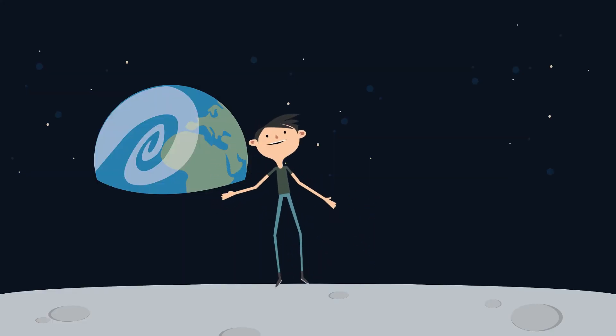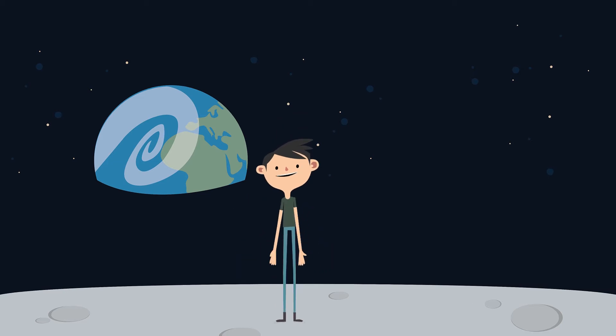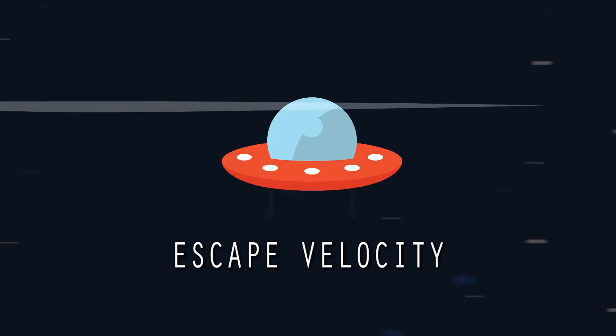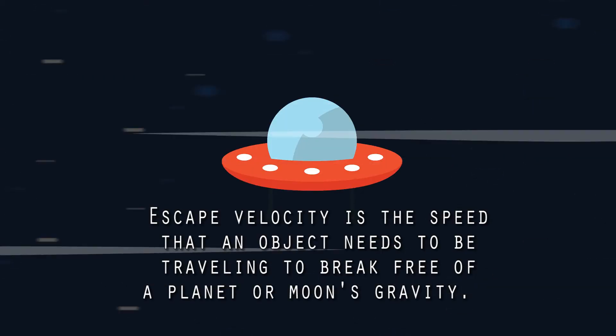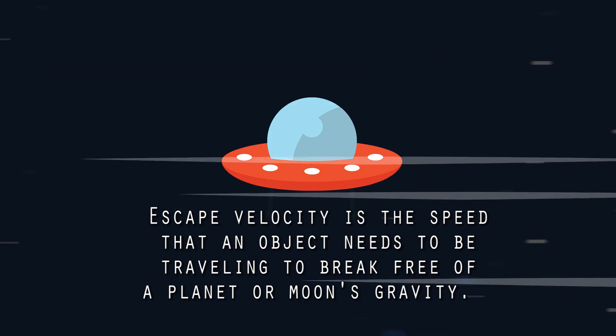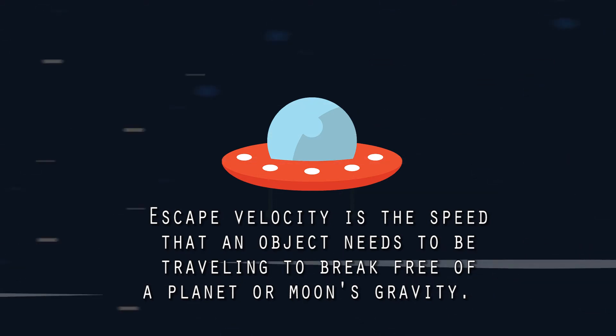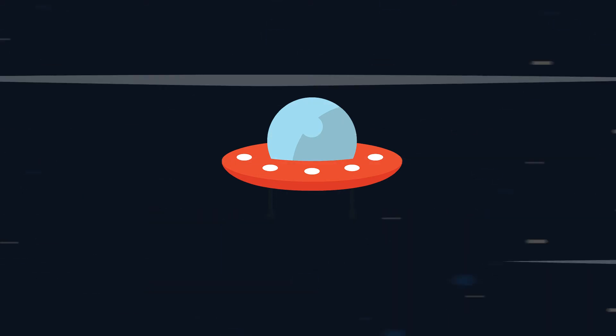To escape moon's gravity, we need to reach moon's escape velocity. Escape velocity is the speed that an object needs to be traveling to break free of a planet or moon's gravity. For example, a spacecraft leaving the surface of earth needs to be going seven miles per second.